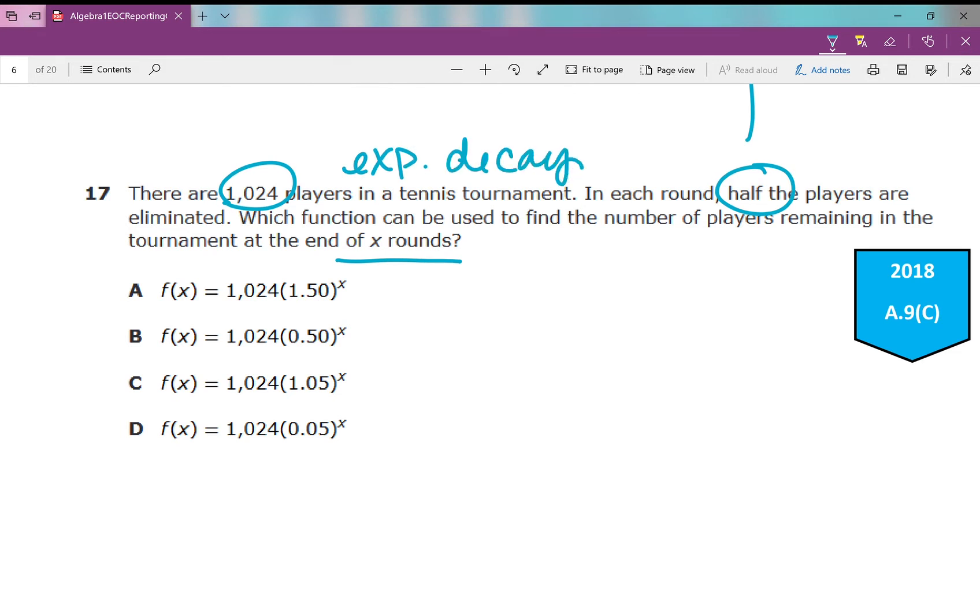So 50%, which is half as a decimal, is 0.5. That's our rate as a decimal. If we start out with 1,000, and remember, we know it's exponential because our rate is a percent. So y equals a times b to the power of x. We are starting out with 1,024 players, and we are decreasing by one half every time. Half of the amount every single time.